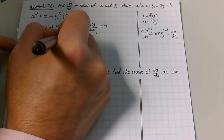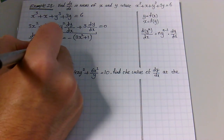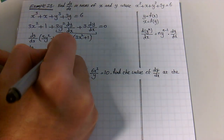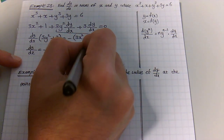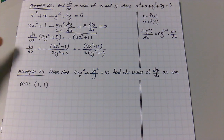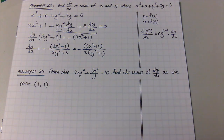Now factorize dy/dx and move everything else to the other side: dy/dx·(3y² + 3) = −(3x² + 1). Therefore dy/dx = −(3x² + 1) / (3y² + 3), which simplifies to −(3x² + 1) / (3(y² + 1)).